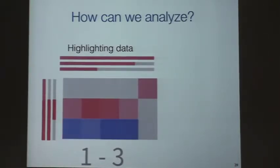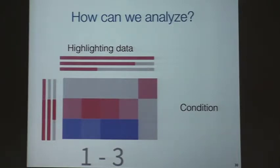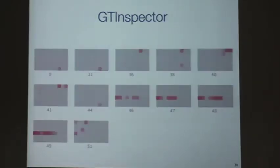The other thing we can do is highlighting data. How? With a condition — every relationship that satisfies some condition will be highlighted. We also have a goal. Here is a little example with data Alexandre gave to me, about JetInspector — the first versions.